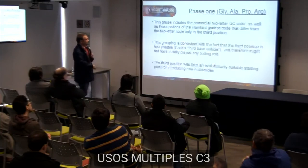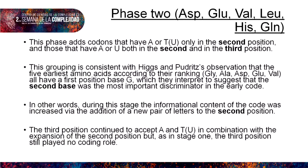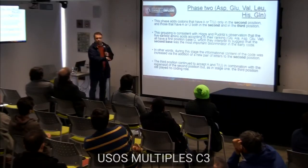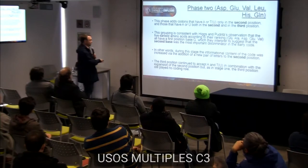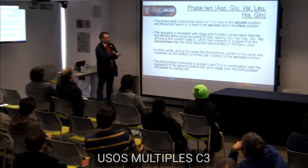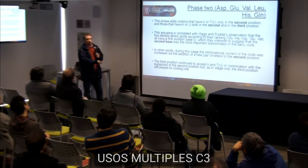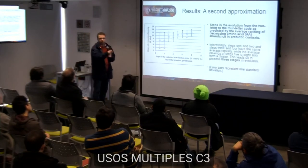Phase two adds codons where A or U appears in the second position, and also in the second and third positions. This is consistent with the literature, where many have argued that the second base was the most important discriminator and G was fixed in the first position for a long time. Our analysis confirms this. During this second stage, the extra letters were likely introduced into the second position, while the third position still played an accordant role — its variation remained redundant and made no difference.